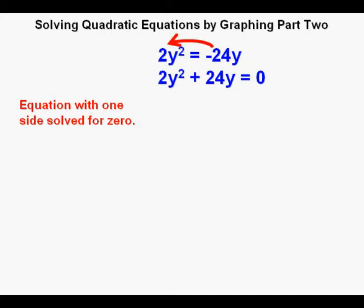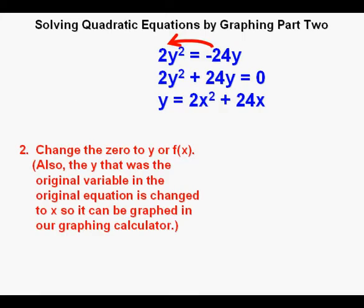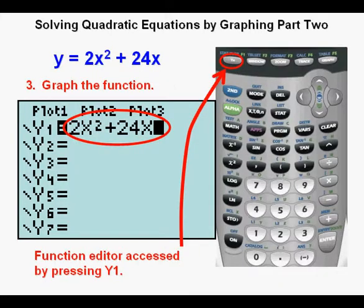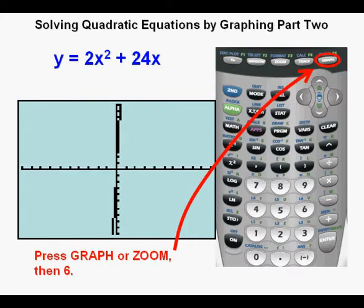Step 2: change the zero to y. Joe converts the equation to a calculator-graphable quadratic function by changing the zero to y, the y's to x's, and swapping sides across the equal sign. So what we have is y equals 2x squared plus 24x. Step 3: graph the function. He places the function in the function editor by pressing y equals, then graphs by pressing graph or zoom 6.